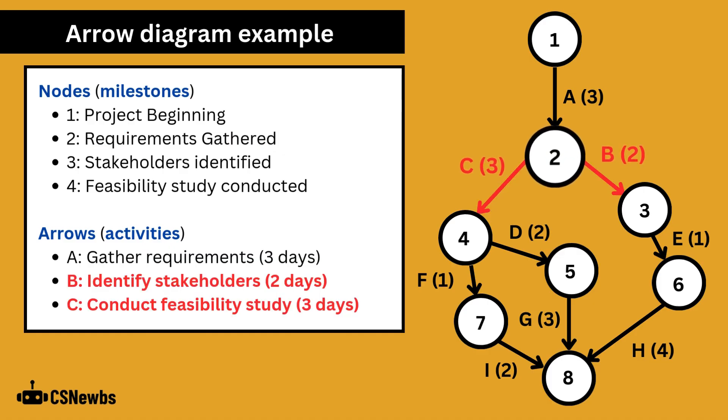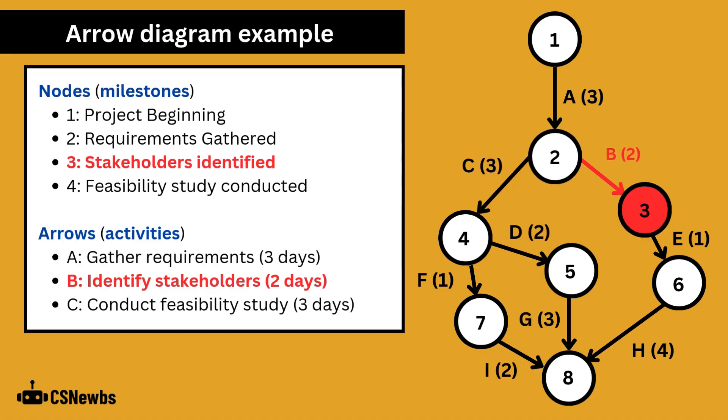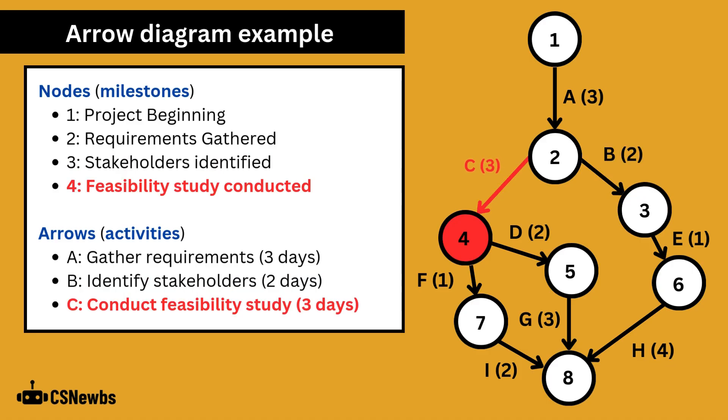Now there are two activities which could be completed simultaneously or separately depending on how the project is managed. Activity B is to identify stakeholders. It will take two days and take us to milestone 3. Activity C is to conduct a feasibility study and it will take us to milestone 4.